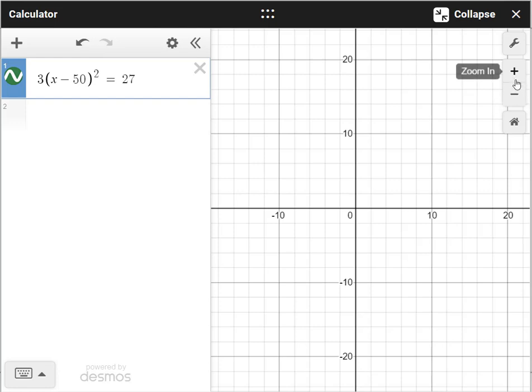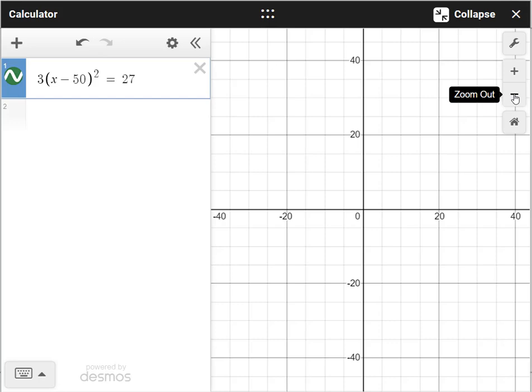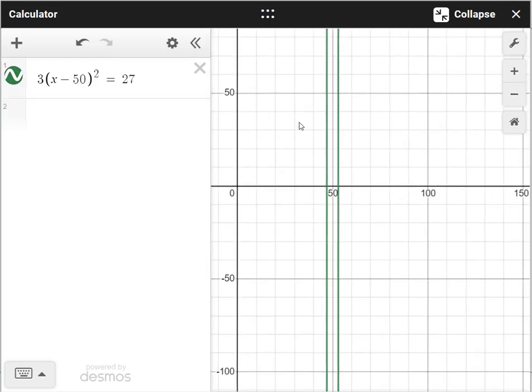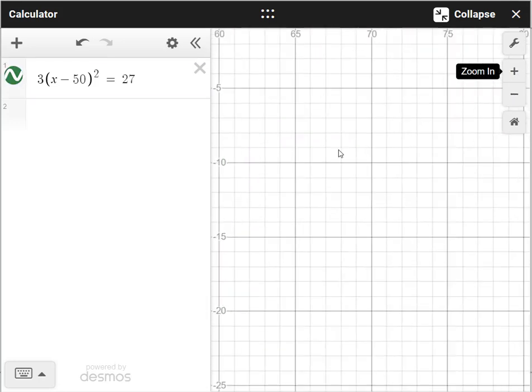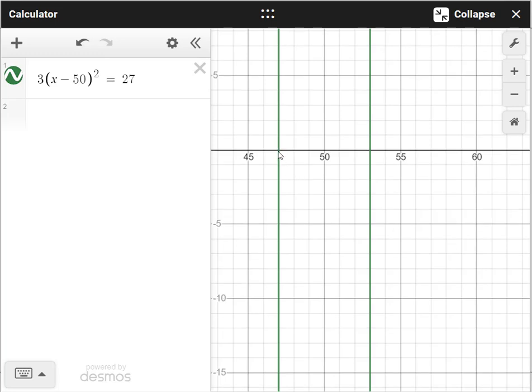So you can just punch that quadratic equation in and just graph it. You don't see anything here so sometimes you'll have to zoom out. And there it is. So you're gonna have to move the graph. And then if you click here that's one solution 47 and 53. They were asking for the larger of the two solutions so it would be 53.